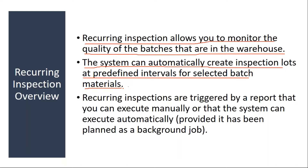Recurring inspection is normally used in process manufacturing industries like pharmaceuticals, food manufacturing, and chemical industries. Even though the material is inspected for the first time when received, after that they have to inspect the material at predefined intervals — like after every one year — till the entire stock of that material is consumed. That is why it is called recurring inspection: you are doing the inspection multiple times.